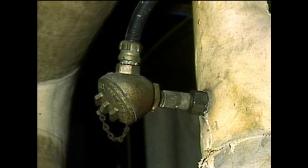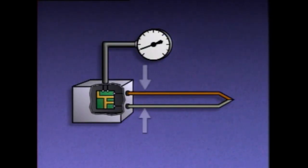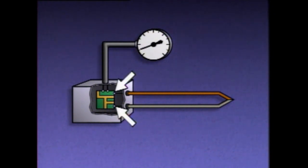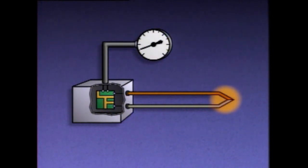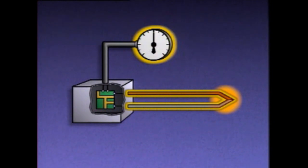While many temperature indicators are mechanical devices, some, like this thermocouple, are thermoelectric devices — they convert heat into electricity to measure temperature. A thermocouple consists of two wires of different metals joined at one end. The opposite ends of the wires are connected to an electronic circuit, which in turn is connected to an indicator. When heat is applied to the joined ends, a small voltage is generated in the wires. The electronic circuit detects the voltage and converts it to a corresponding temperature.